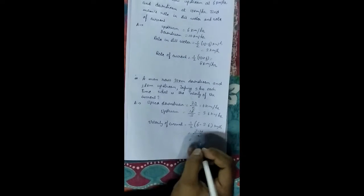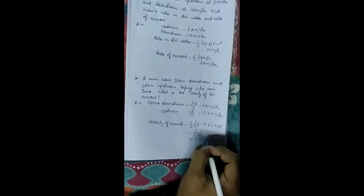We know half of A minus B, half of 6 minus 3.6 km per hour means 6 minus 3.6 by 2, 2.4 by 2 means 1.2 km per hour.